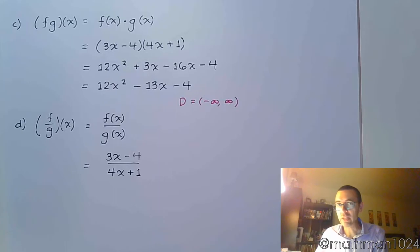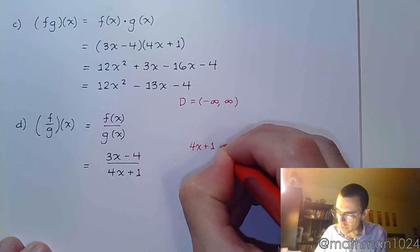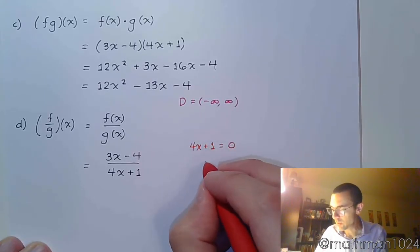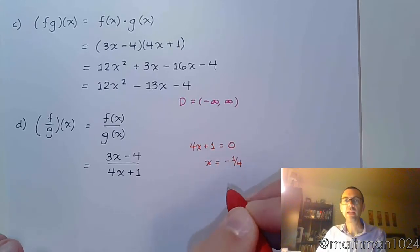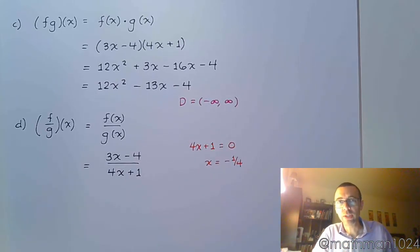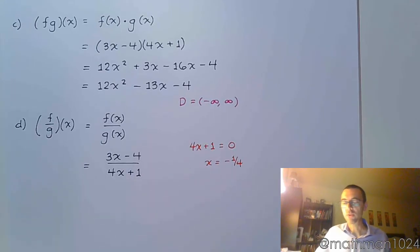Our domain is now not going to be all real numbers. Even though individually these have a domain of all real numbers, when you do the division, you have to avoid creating a denominator that's zero. So you've got to be thinking about this question: Can 4x plus 1 ever equal zero? And we know that it can, because if you solve this, you get negative 1 over 4. And this goes back to discussions we had previously about rational expressions and rational equations, restricted values, right? So this says that x equals negative 1 fourth makes my denominator zero, so that's my restricted value.